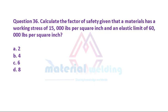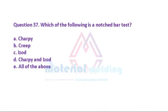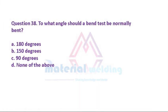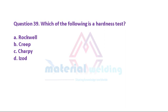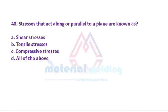Question 37: Which of the following is a notched bar test? A. Charpy. B. Creep. C. Izod. D. Charpy and Izod. E. All of the above. Question 38: To what angle should a bend test normally be bent? A. 180 degrees. B. 150 degrees. C. 90 degrees. D. None of the above. Question 39: Which of the following is a hardness test? A. Rockwell. B. Creep. C. Charpy. D. Izod. Question 40: Stresses that act along or parallel to a plane are known as: A. Shear stresses. B. Tensile stresses. C. Compressive stresses. D. All of the above.